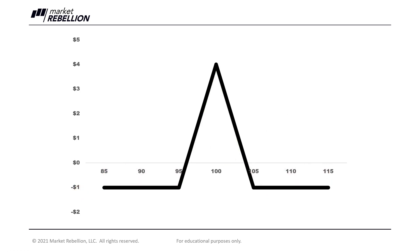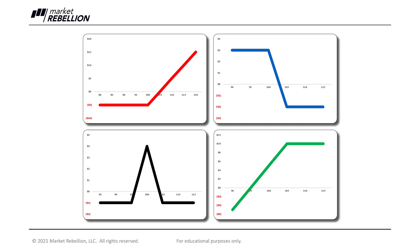Just by looking at a simple picture, even for a fairly complex-sounding strategy, you can get immediate insights into what the strategy does. As you continue to learn about options and understand the benefits of options strategies, you must understand the profit and loss diagrams. They show that options allow you to alter risk-reward profiles in ways that cannot be done with shares of stock. So before you begin to tackle options and strategies, be sure you understand how to read your risk graphs — they are going to make things a lot easier for you to get started.